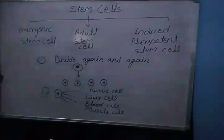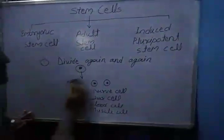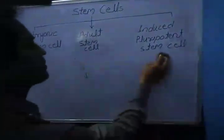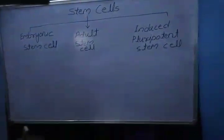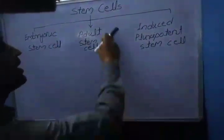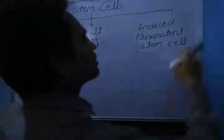So come to the next point: stem cells are divided into three types. The first one is embryonic stem cell, the second one is adult stem cell, and the third one is induced pluripotent stem cells.